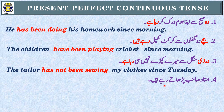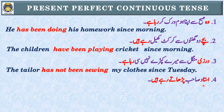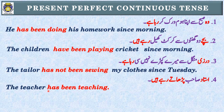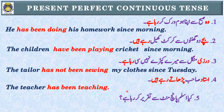Sentence 4: 'استاد صاحب پڑھاتے رہے ہیں۔' Identification: 'تے رہے ہیں' — Present Perfect Continuous Tense۔ Subject: 'استاد' یعنی teacher — singular noun — has been۔ The teacher has been teaching.